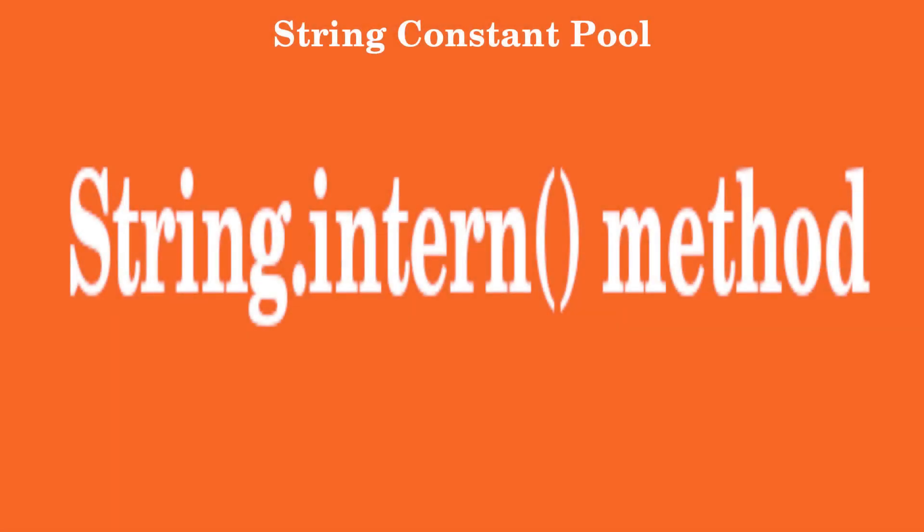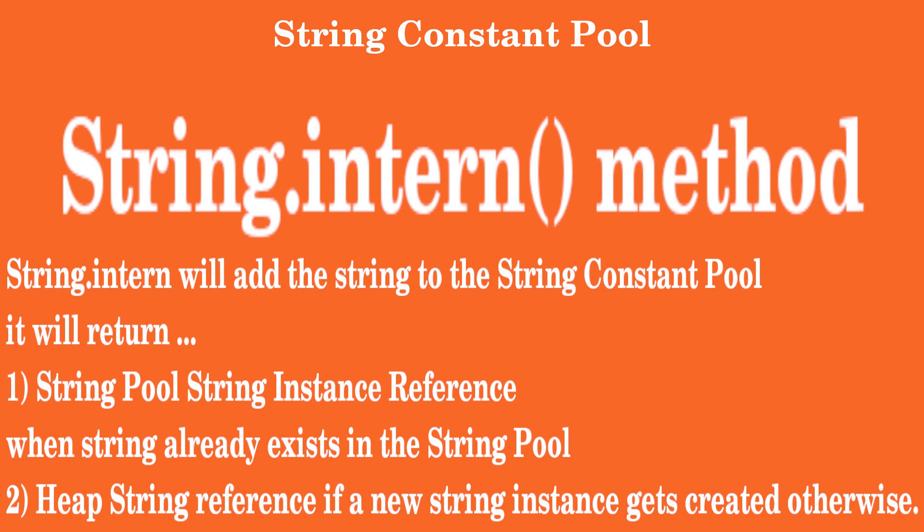Now let's look at another method called intern in string class. When you call a string dot intern on any string instance, the JVM will check if the value of the string instance already exists in the string pool by using string dot equals method. And if the string pool already has such a value, then the reference to that instance in the string pool is returned. Otherwise, a new string instance is created in the string pool, and the original object instance's reference is returned from the heap space. The next example will illustrate this point.